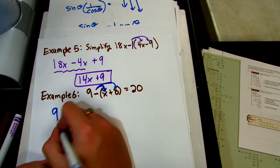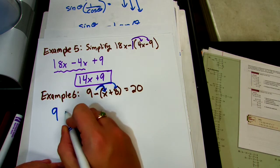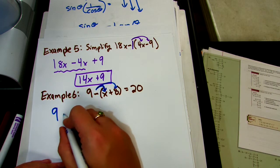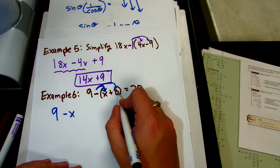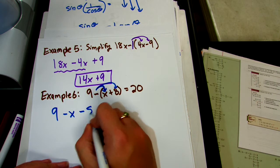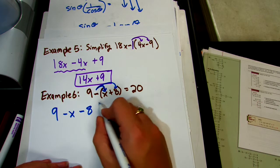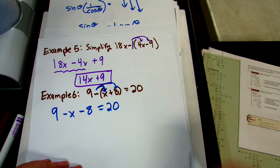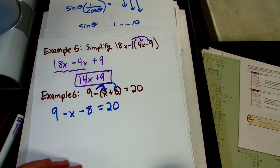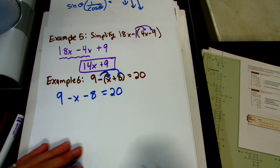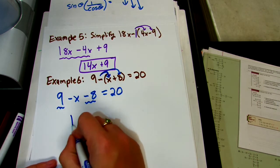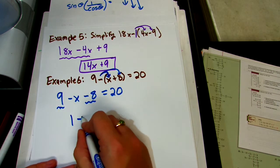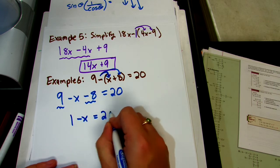You are distributing a negative — timesing by negative 1. Negative times x is negative x; negative times 8 is negative 8. Now we can combine like terms: 9 minus 8 is 1. So we have 1 minus x equals 20.